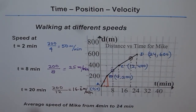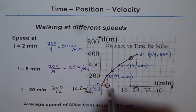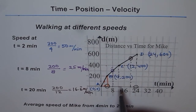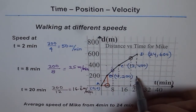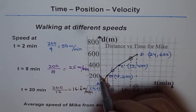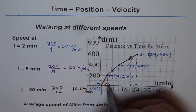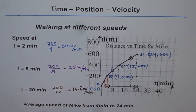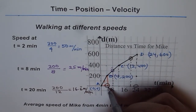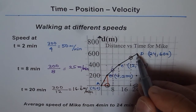As an exercise, find the average speed of Mike from 4 minutes to 24 minutes. Make a large triangle: change in distance = 600 − 200 = 400 meters; change in time = 24 − 4 = 20 minutes. So average speed = 400 over 20 = 20 meters per minute.